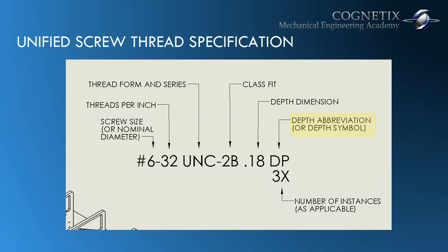In the case of a thread that goes all the way through a part or a wall, you would not have a depth symbol — you would simply say 'through.' Underneath we see the number of instances as applicable. So let's talk about each one of these in more detail.